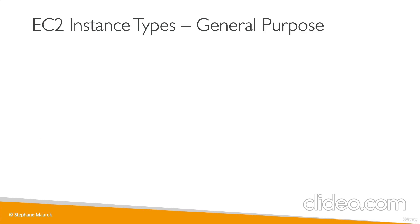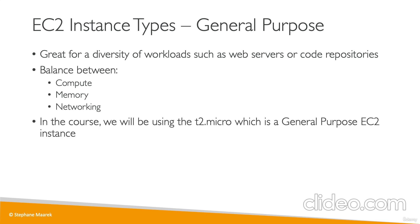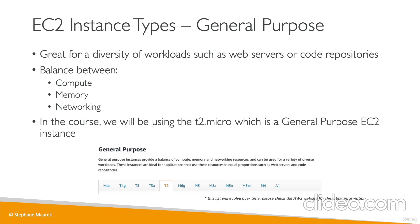From an exam perspective: General Purpose instances are great for a diversity of workloads such as web servers or code repositories. They have a good balance between compute, memory, and networking. In this course, we'll be using general purpose instances — we'll use the T2 micro, which is the free tier general purpose type of instance. You can refer to the AWS website to check what instances are in the general purpose family, as it evolves over time.